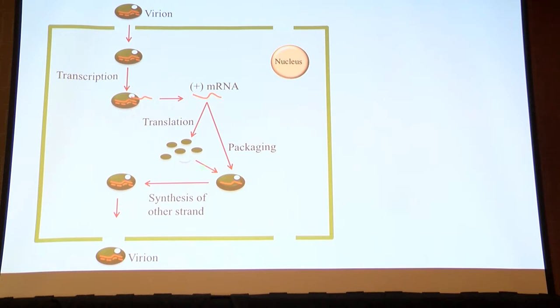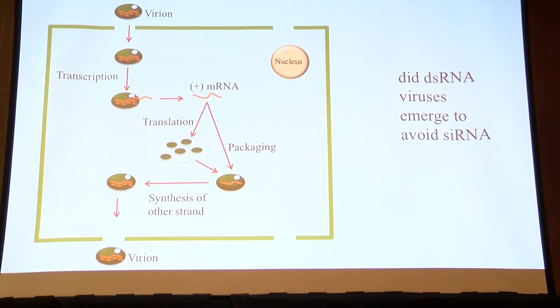Eugene was talking this morning about dsRNA RDRPs coming out of single-stranded RDRPs, and it made me think that perhaps these emerged to avoid siRNA, because they don't expose their double-stranded RNA to the cell.